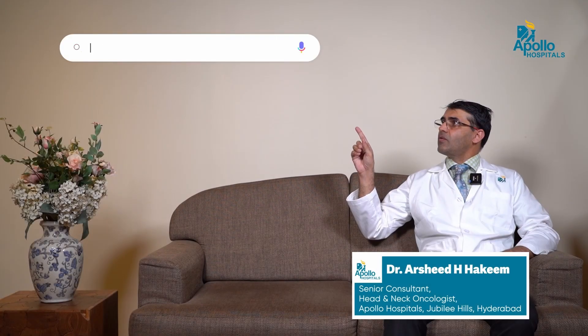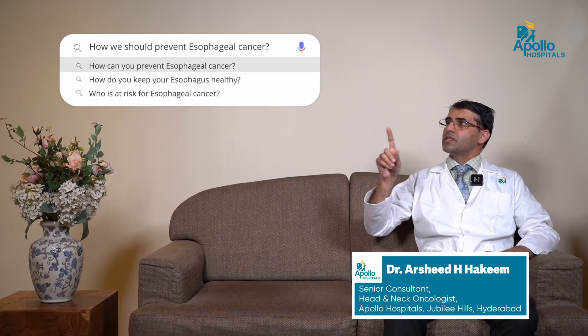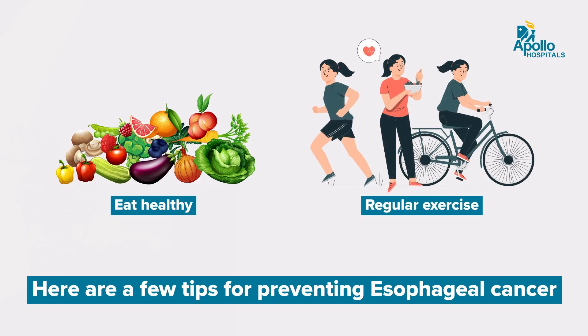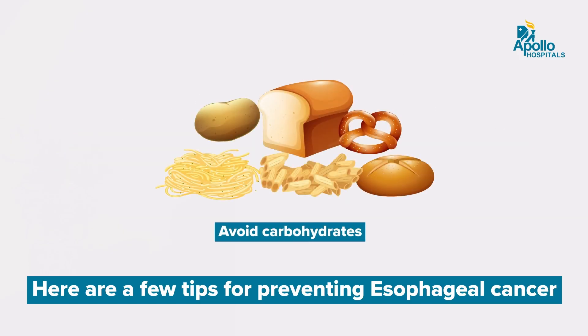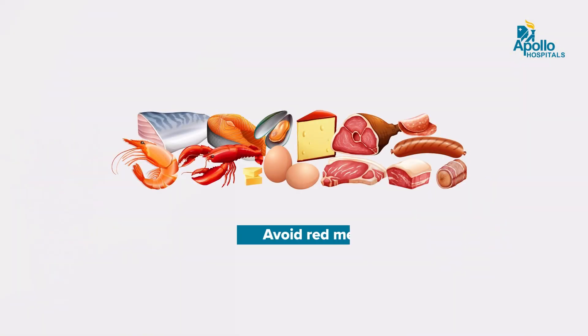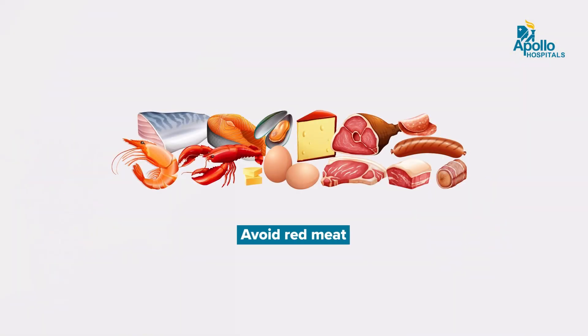How should we prevent esophageal cancer? The best thing a person can do is eat healthy and lead a healthy lifestyle. One should decrease carbohydrates in the diet and have more fruits and vegetables — a high fiber diet, less carbohydrates, less red meats. This will provide a healthy diet and help in the prevention of esophageal cancer.